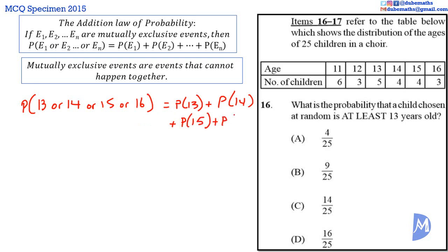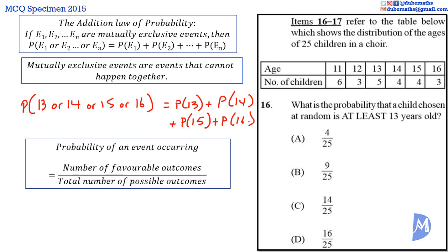The probability of an event occurring is equal to the number of favorable outcomes over the total number of possible outcomes. Thus, in the probability that the child is 13, the number of favorable outcomes is 5. If a child is chosen at random, there are 5 different children that can be chosen to have a favorable outcome. And the total number of outcomes, we have 25 children, so the total number of outcomes is 25. So, the probability of a child being 13 is 5 over 25.